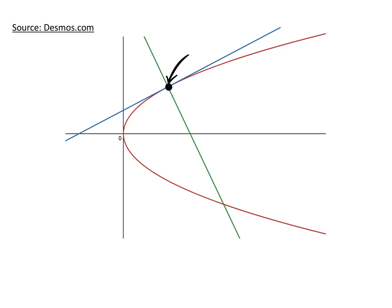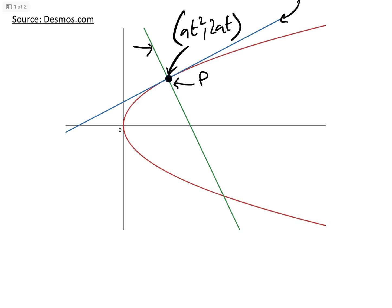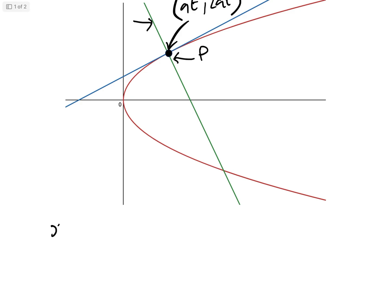Let this point here be the general point (at², 2at) on a right-opening parabola. Here we have the tangent and here we have the normal at this point P. To find the tangent gradient, we differentiate parametrically. So x = at², which gives us dx/dt = 2at.